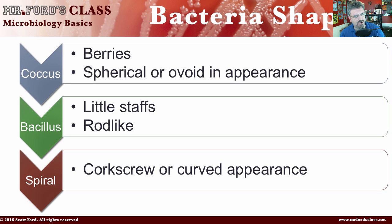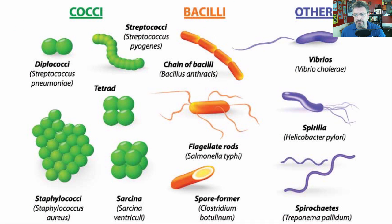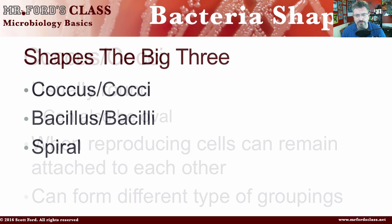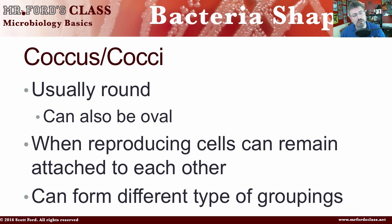The cocci is berry-shaped — spherical or ovoid in appearance. The bacilli are little staffs, they're rod-shaped. And the spirilli are corkscrew or have a curved appearance. Let's take a look at a little graphic we'll use throughout this presentation. Again, CBS: cocci, bacilli, and spirilli. Looking first at the cocci, it's usually round, but it can also be oval — it can vary a little bit.